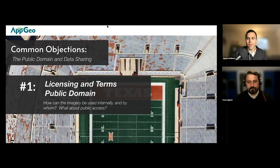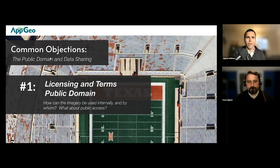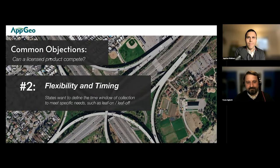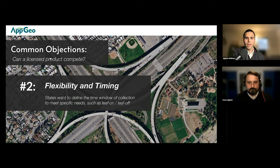When the Utah spec was being put together, the list of named organizations specifically having access was probably the longest part of the entire document — state universities, local and state government offices, all sorts of different agencies all with equal access. It's pretty cool that so many people can take advantage of the imagery rather than it being hoarded in one office. The ability to have a downsampled product ready for public download is going to be great. Moving on to our second biggest concern: flexibility and timing of flights. Different agencies have different needs — leaf-on versus leaf-off — for things like building footprint analysis versus tree canopy assessment.